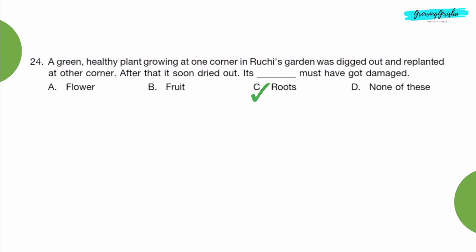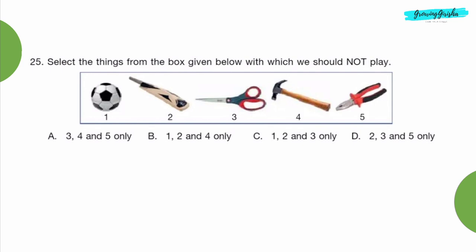Question 25: Select the things from the box given below with which we should not play. Option A, 3, 4, and 5 only.